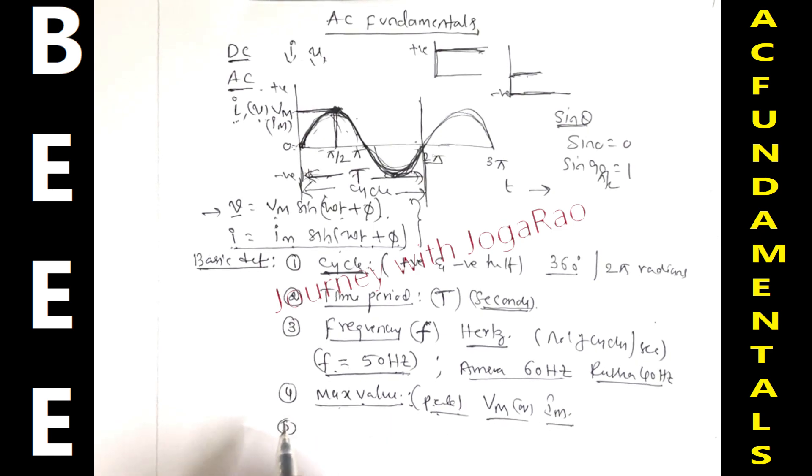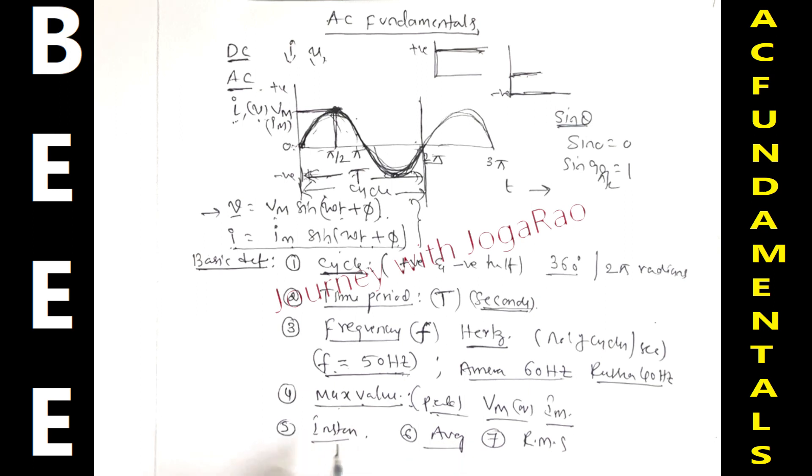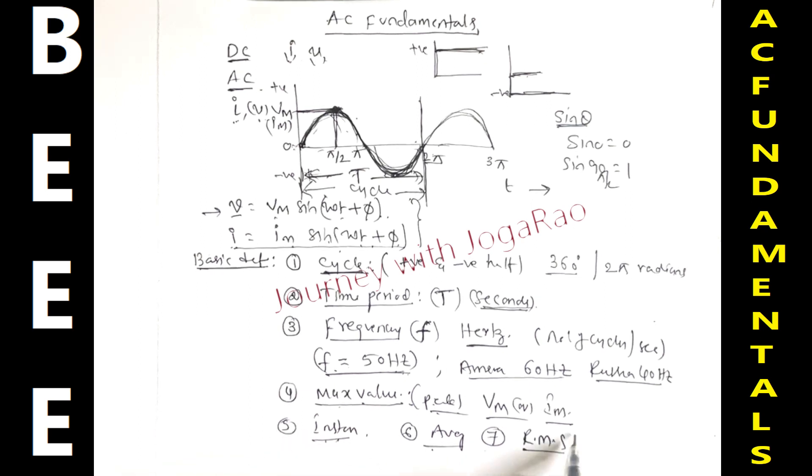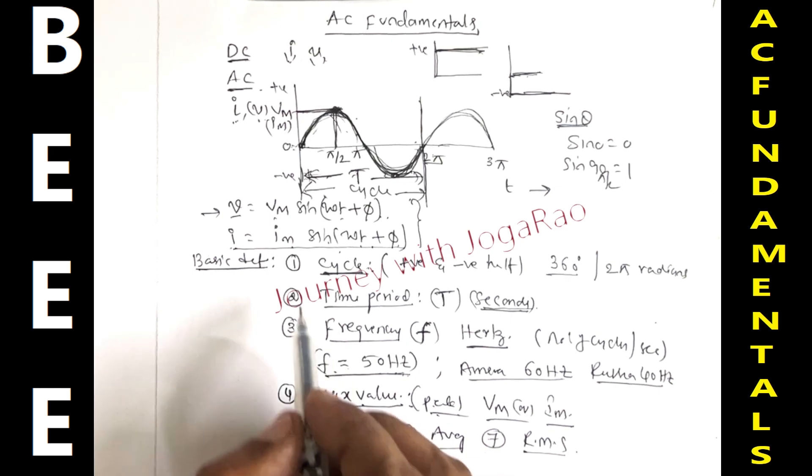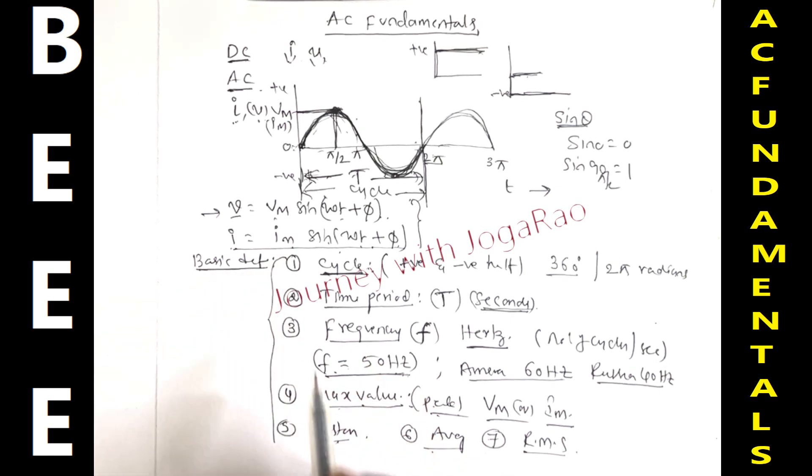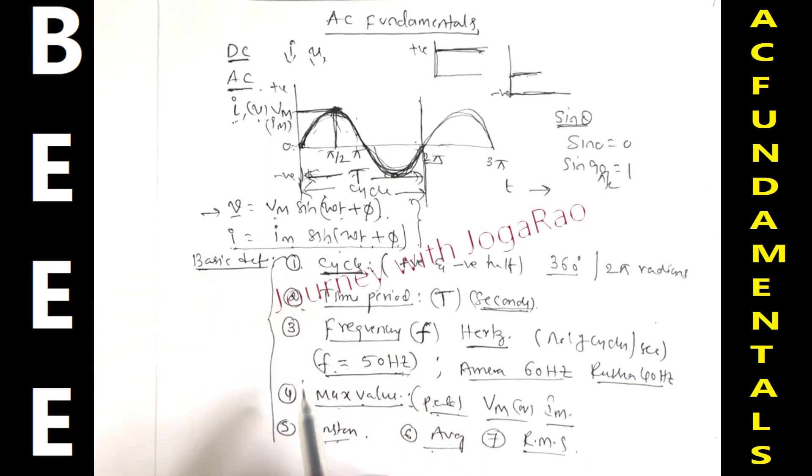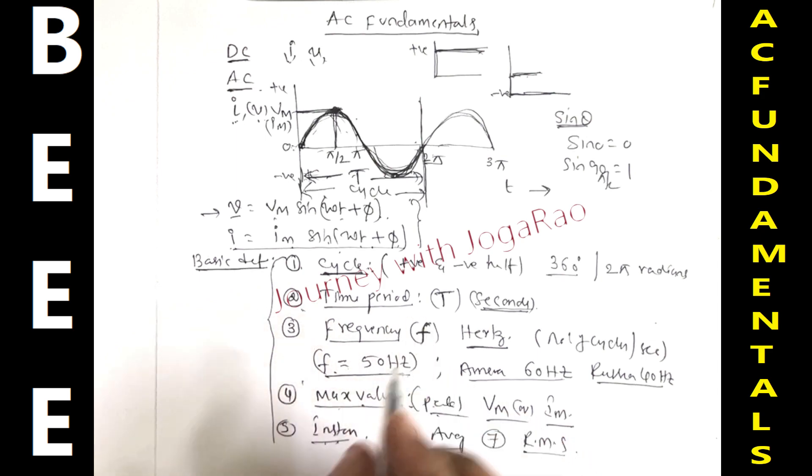Next definition is instantaneous value. Next, average value. Next, RMS value. Dear students, after this video covering instantaneous value, average value, RMS value, comment in the comment box. So you have basic definitions, basic fundamentals.